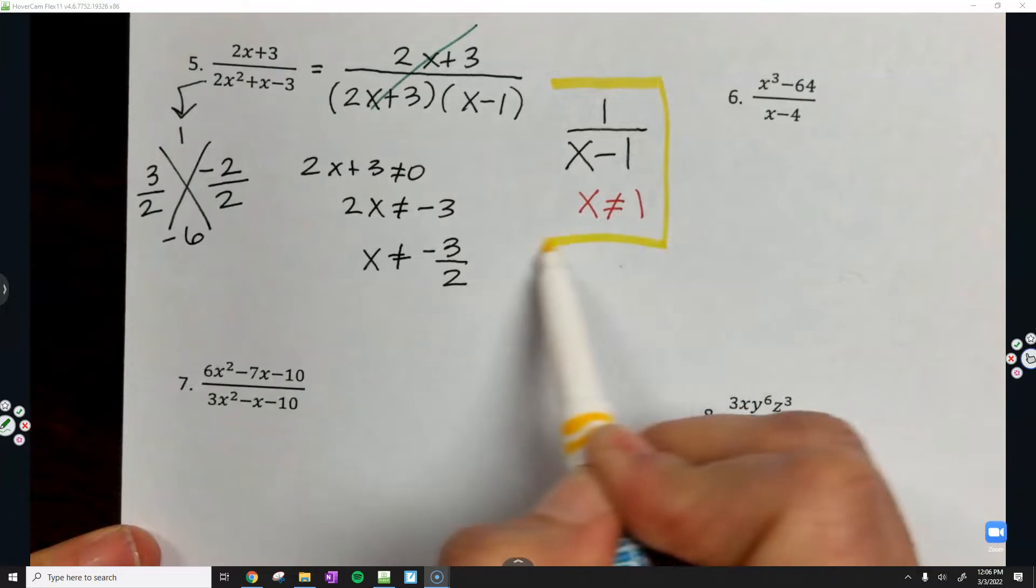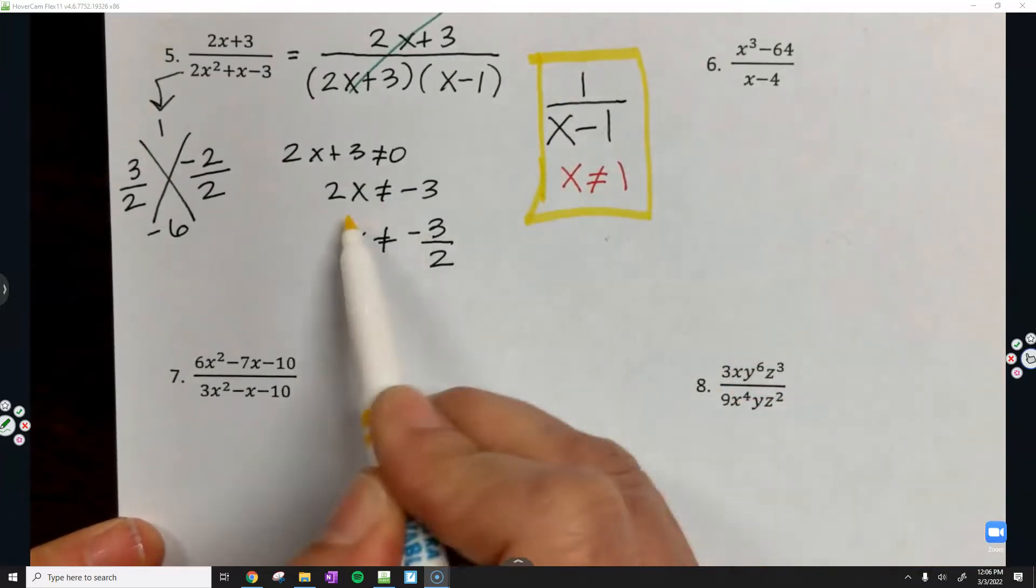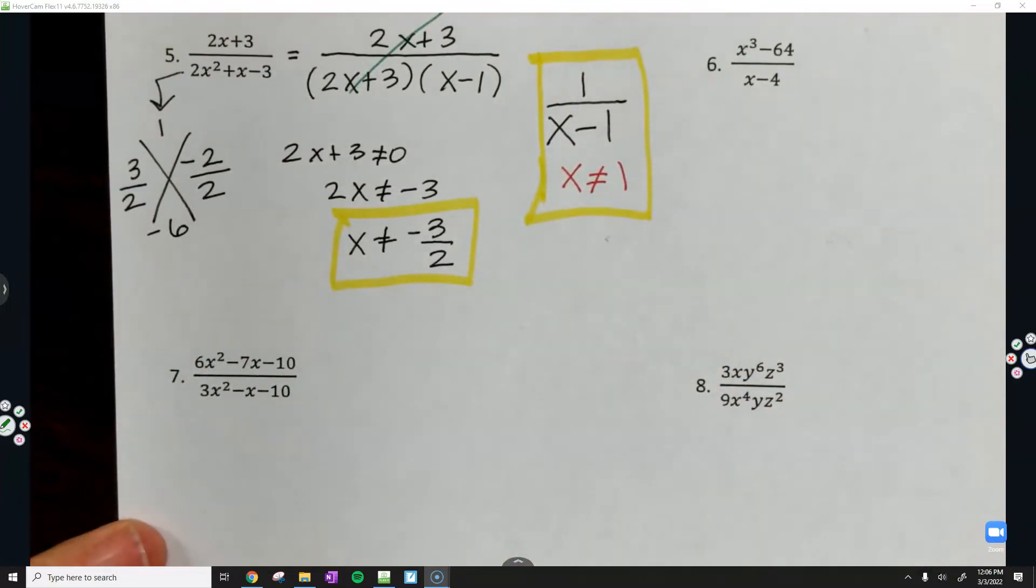And remember, we have 2 restrictions. x cannot equal a positive 1. Also, x cannot equal a negative 3 halves.